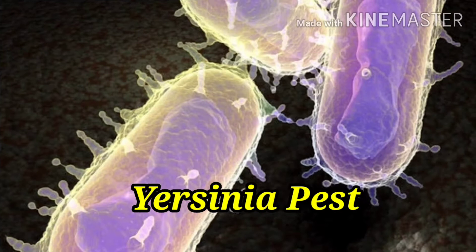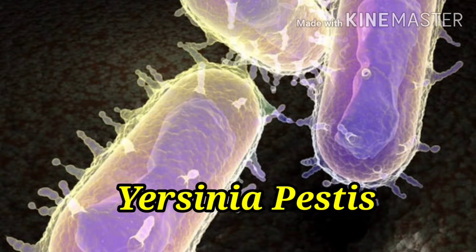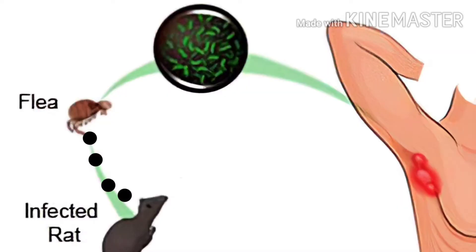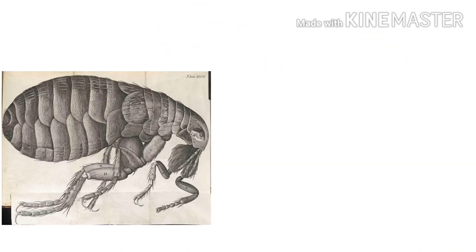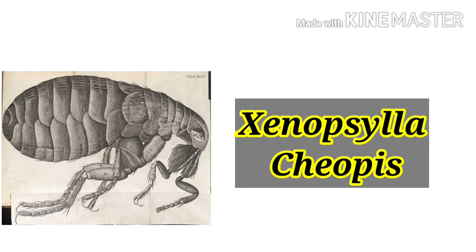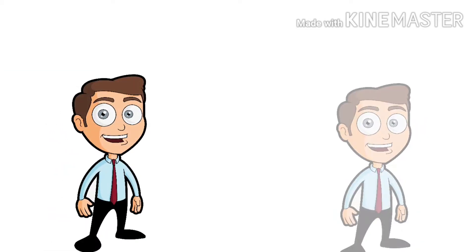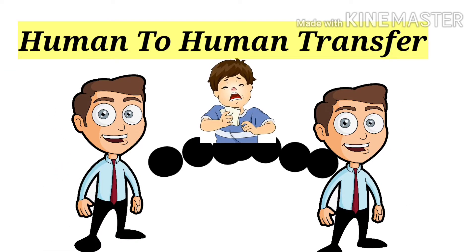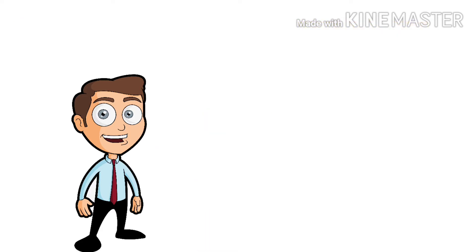This bacteria is most commonly seen in rats. This plague is most commonly transmitted from rodents to humans by the bite of a flea known as Xenopsylla cheopis, and human-to-human transmission is by respiratory droplets through coughing, sneezing, etc.